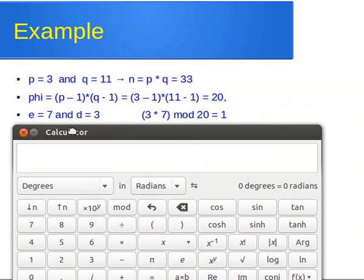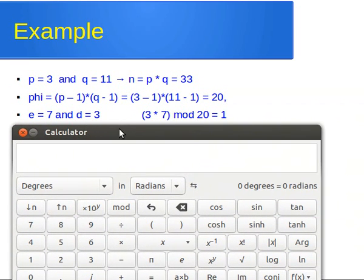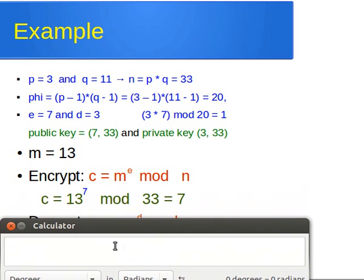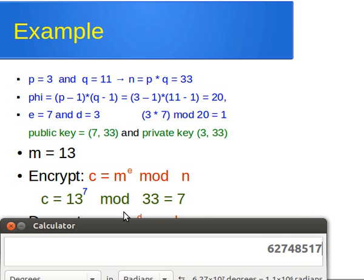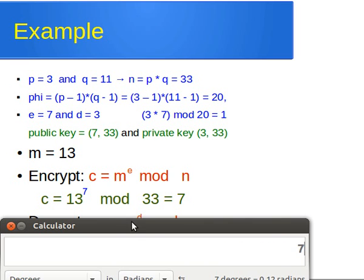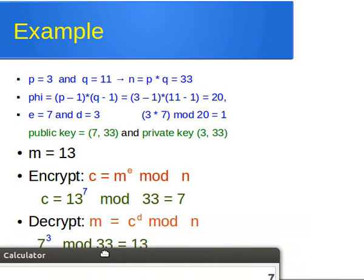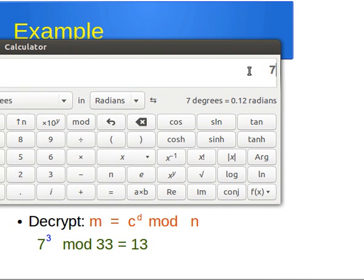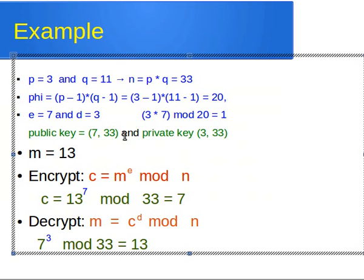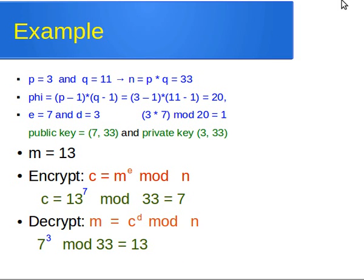Let me quickly show this on the calculator. We raise 13 to power 7 and compute mod 33 — the result is 7. Then to recover the original message, we raise 7 to power 3 — that's D — and compute modulo 33, and we get 13 back, as you can see. I'm going to stop here. Thank you very much for watching, and I'll see you in one of my next videos.